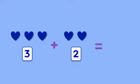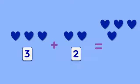Now count hearts. One, two, three. Three hearts plus one, two—two hearts equals how many hearts? Count all together. One, two, three, four, five. There are five hearts. Three plus two equals five. Now count the stars.